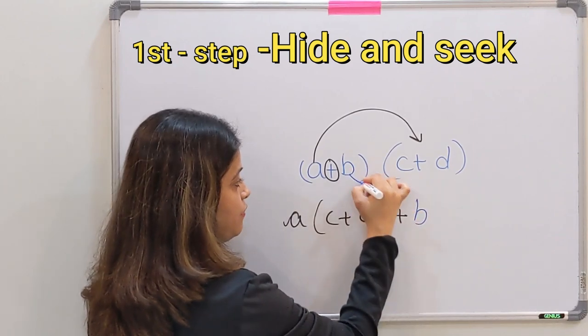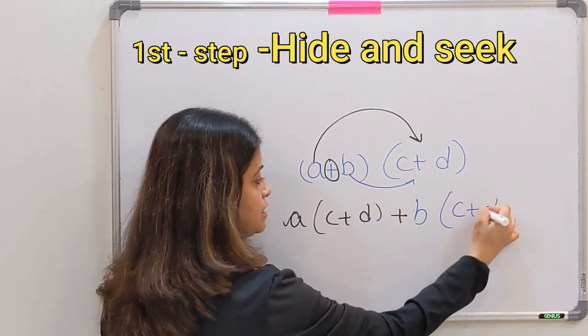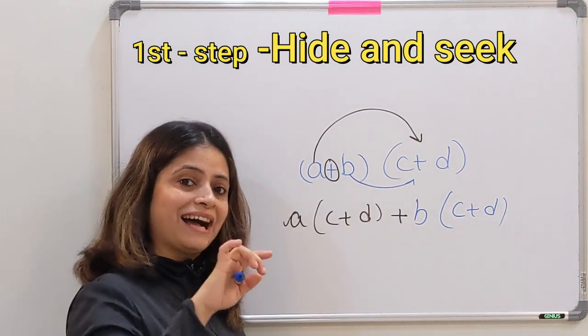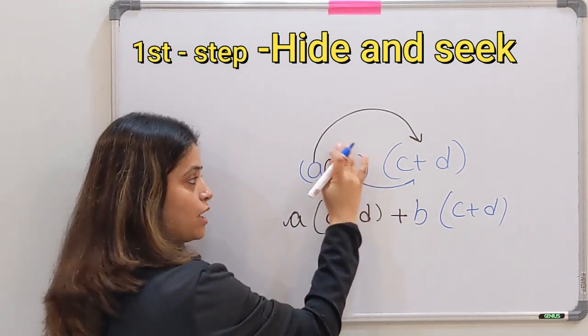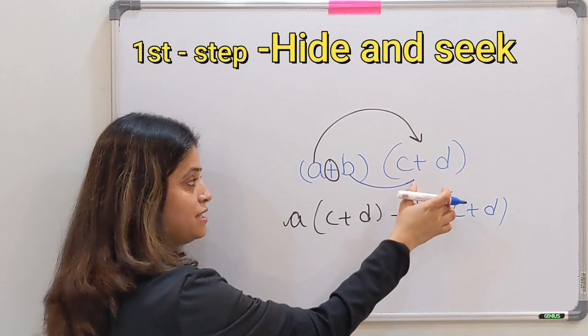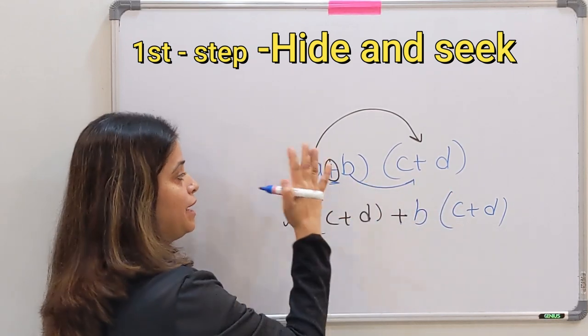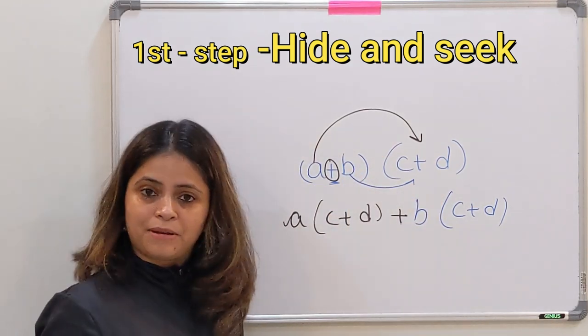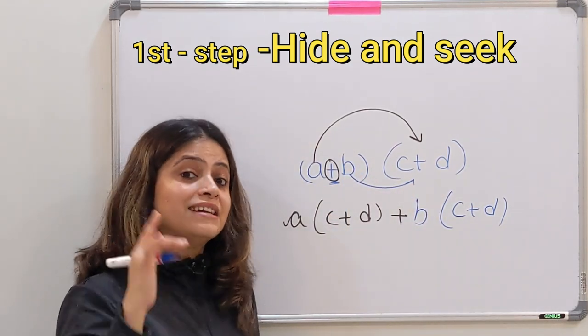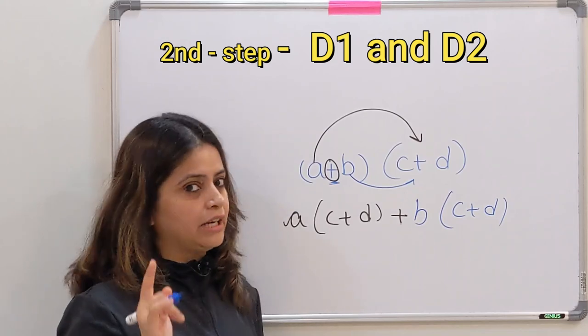Now we will be hiding our A and multiplying B by this complete C plus D. Like this, B will be multiplied with C plus D. So the first step is hide and seek: hide B ko, karo A ko multiply C plus D ke saath. Then this plus sign will come here, then we will be hiding A and B will be multiplied by C plus D.